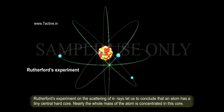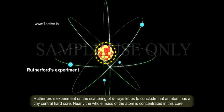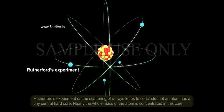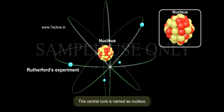Rutherford's experiment on the scattering of alpha rays let us conclude that an atom has a tiny central hard core. Nearly the whole mass of the atom is concentrated in this core. This central core is named as nucleus.